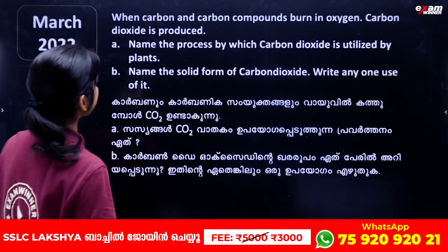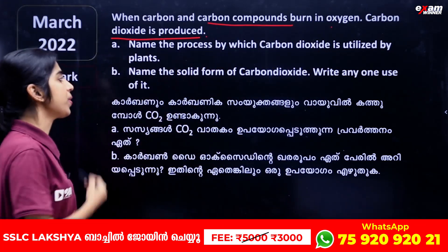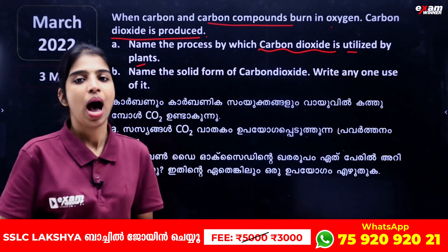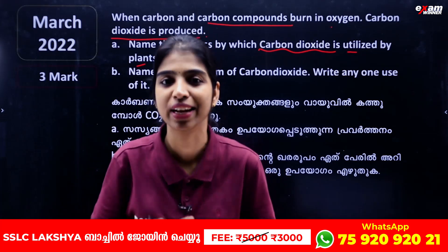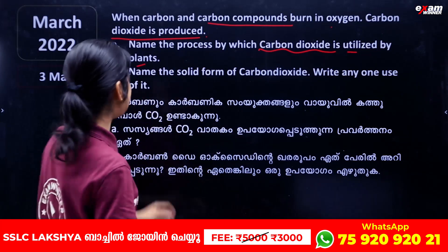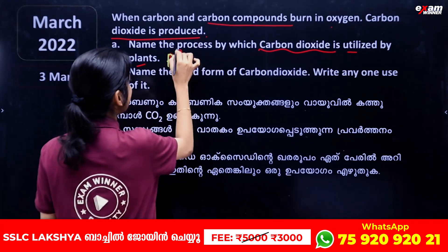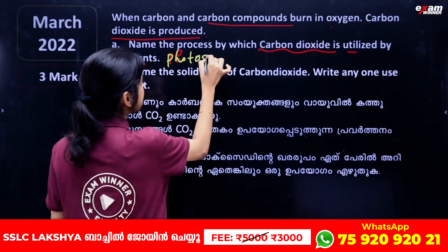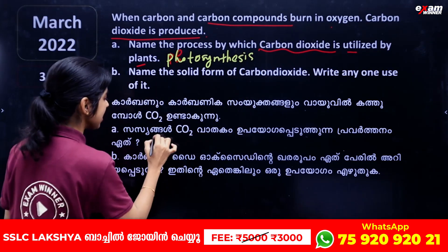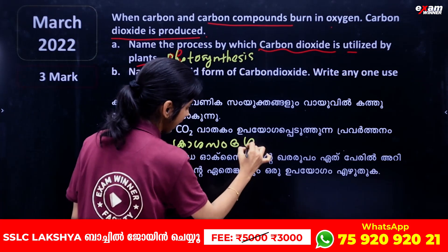When carbon and carbon compounds burn in oxygen, carbon dioxide is produced. This carbon dioxide is utilized by plants through the process of photosynthesis.